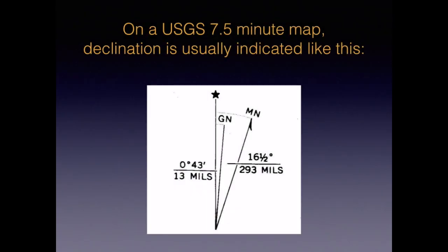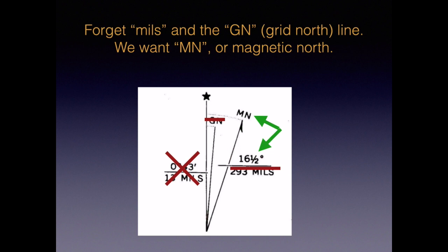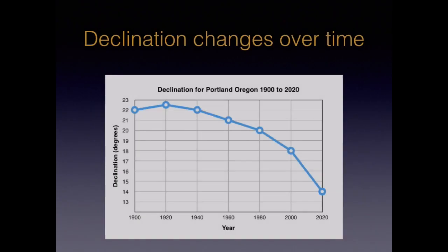Topographic maps typically have the declination value printed on them somewhere, usually as a diagram. On a standard U.S. Geological Survey map, it usually looks like this. Most users can forget about the MILS and the GN, which stands for grid north. All we want is the value for MN, or magnetic north, shown here as 16.5 degrees east. However, if your map is older, the declination is probably a bit out of date.